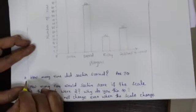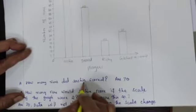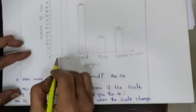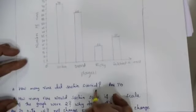So first question: what they given here, how many runs did Sachin score? If you change, you took the scale 5, how many runs Sachin scored here? 70. Same.